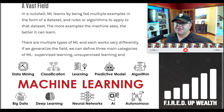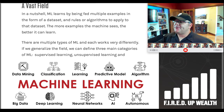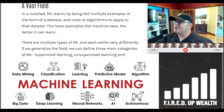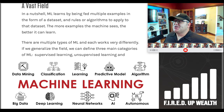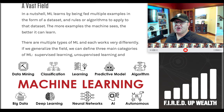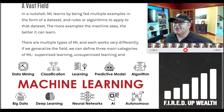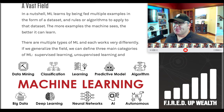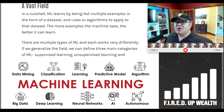AI is a vast field and machine learning is its own vast field within AI. In a nutshell, ML learns by being fed multiple examples in the form of a data set with rules or algorithms to apply. The more examples the machine sees, the better it learns. Software using machine learning gets smarter the longer people use it — it ages like fine wine. There are three main categories of ML: supervised learning, unsupervised learning, and reinforcement learning.